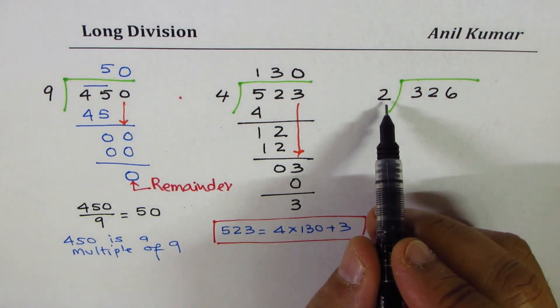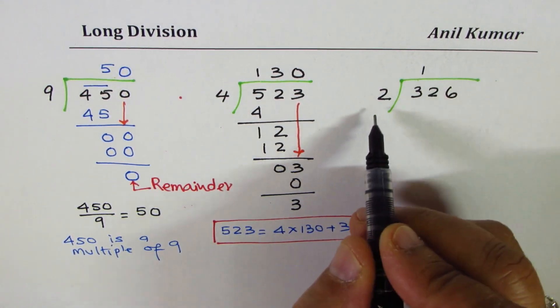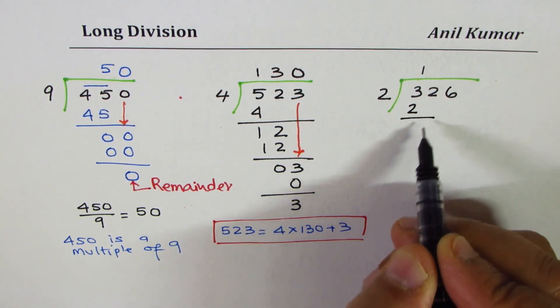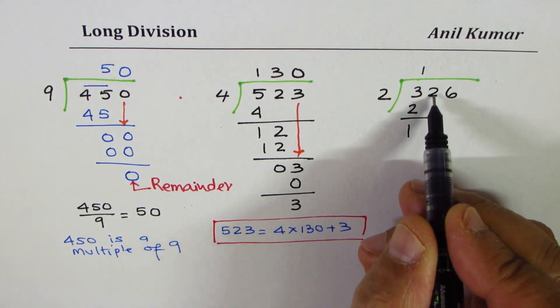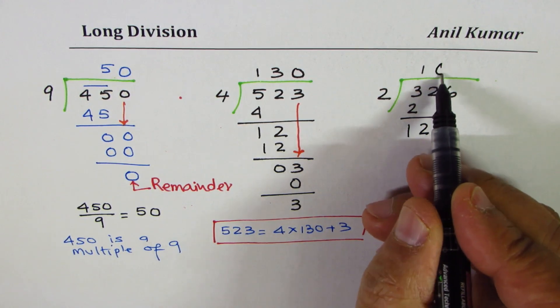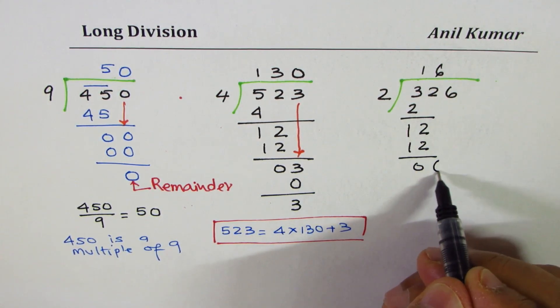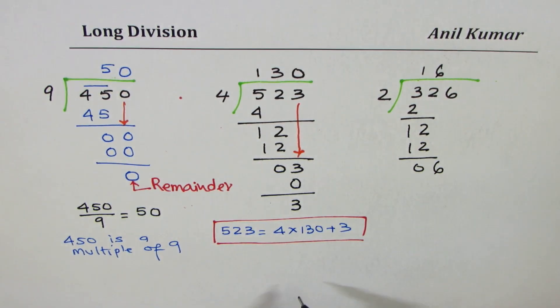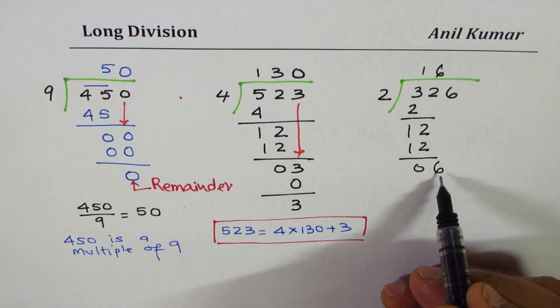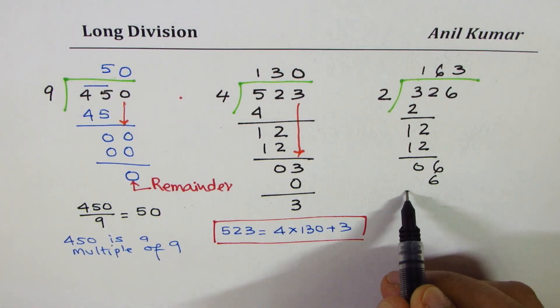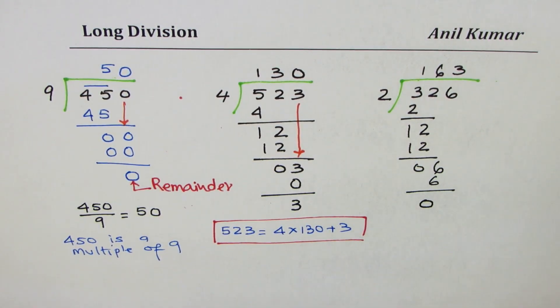326 divided by 2. 3 is greater than 2, so it goes 1 time. When you take away, you get 1. Bring down 2. It goes 6 times. 6 times 2 is 12, and you get 0. Bring down 6. We should not stop here. When you divide 6 by 2, it goes 3 times. 2 times 3 is 6. And now, again, remainder is 0.